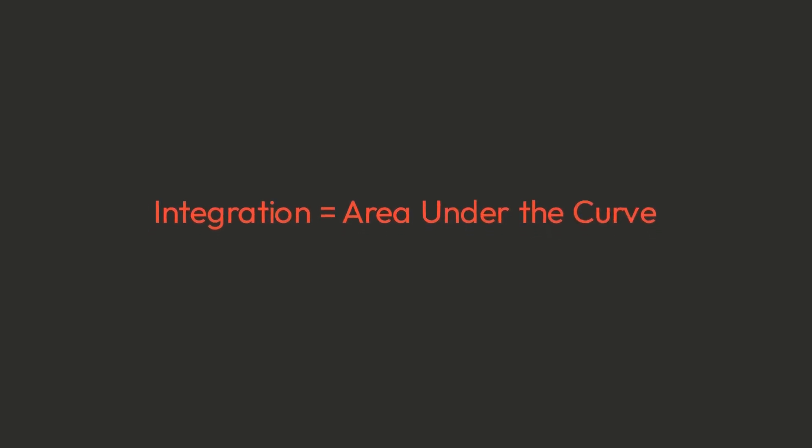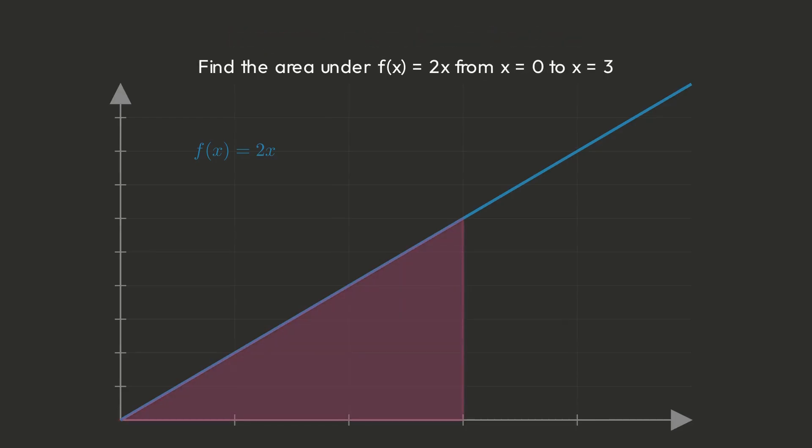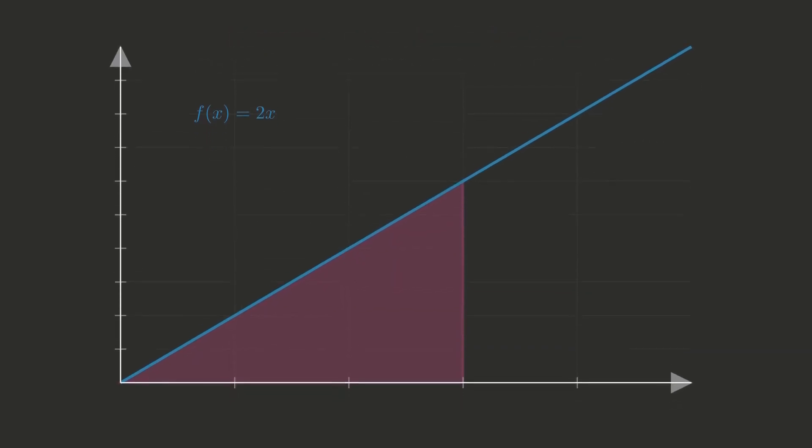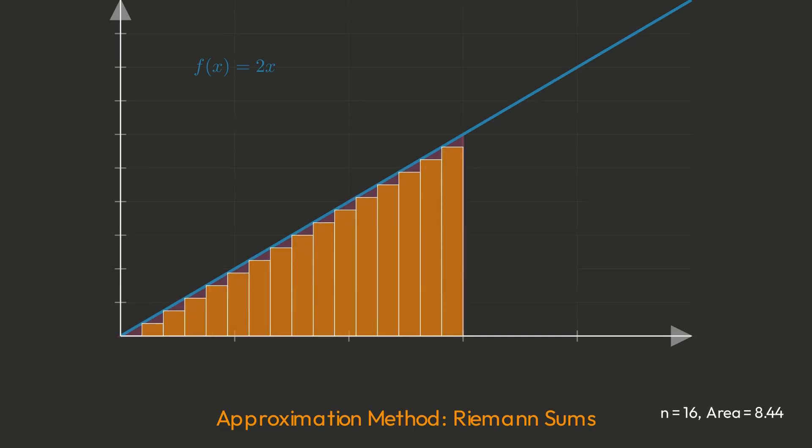Integration has a beautiful geometric meaning. It calculates the area under curves. Want to find the area under f of x equals 2x from x equals 0 to x equals 3? The traditional approach uses rectangles. More rectangles give better approximation. As rectangles get infinitely thin and infinitely numerous, we get the exact area.